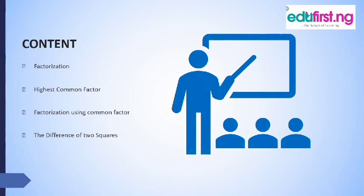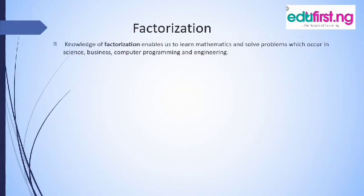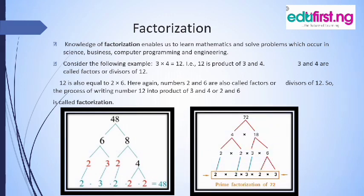For example, 12. One of the ways by which we can get to 12 is the product of 3 and 4, which gives us 12. So 3 and 4 are called the factors, or divisors, of 12. Again, 2 multiplied by 6 also equals 12. So 2 and 6 are also called factors or divisors of 12. So the process of writing number 12 as the product of 3 and 4, or 2 and 6, is factorization.